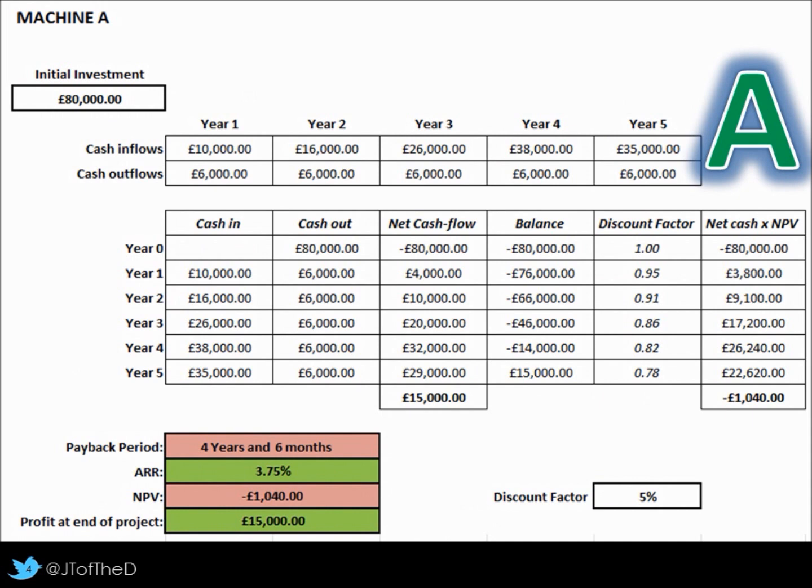Let's have a look at this in a bit more detail. Here's machine A again, slightly neater. There's quite a lot of information here. At the top, next to the label of A, I've put the information from the exam paper. The table below is the one that I've just drawn out. At the bottom there's the summary. The three measures we're interested in, payback, ARR and NPV are all listed here. Where it's red, it's not as good as machine B. Where it's green, it's better. Our average rate of return on profitability is better for machine A, 3.75%.